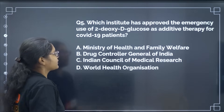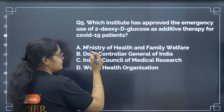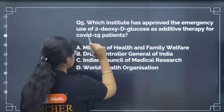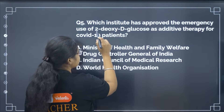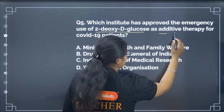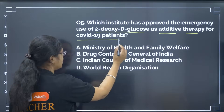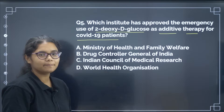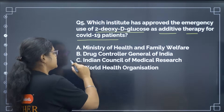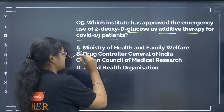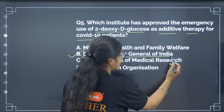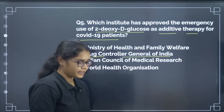Which institute has approved the emergency use of 2-deoxy-D-glucose as additive therapy for COVID-19 patients? The correct answer is option number B, that is the Drug Controller General of India.